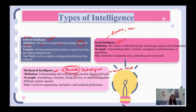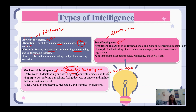For example, solving mathematical problems, logical reasoning, and understanding theories all require abstract intelligence. People with abstract intelligence can become philosophers, poets, and researchers. Entrepreneurship and research are fields associated with abstract intelligence.